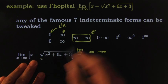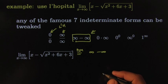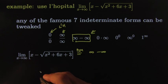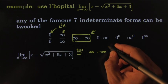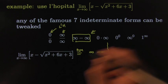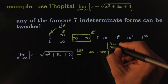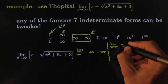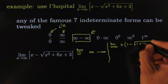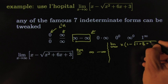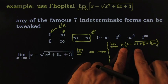Let's use our tweaking skills to get that into the right form. The way to do it would be to factor out an x. So that becomes the limit as x goes towards infinity of x times one minus the square root of one plus 6/x plus 3/x².